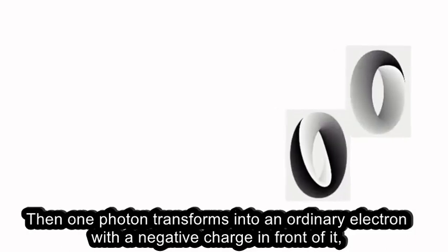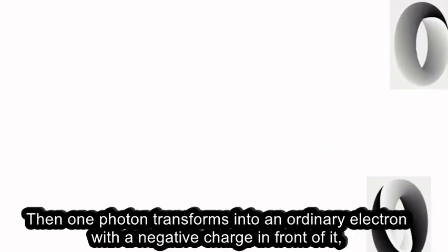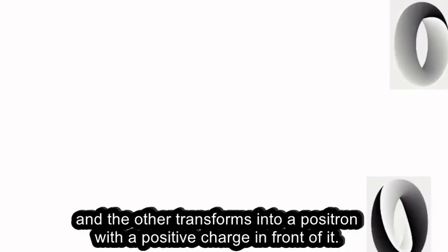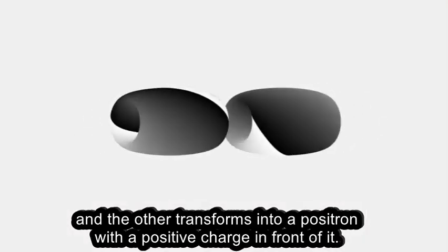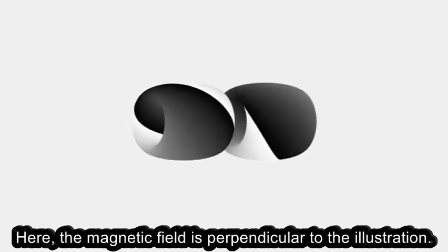Electric charges appear. Then one photon transforms into an ordinary electron with a negative charge in front of it, and the other transforms into a positron with a positive charge in front of it.